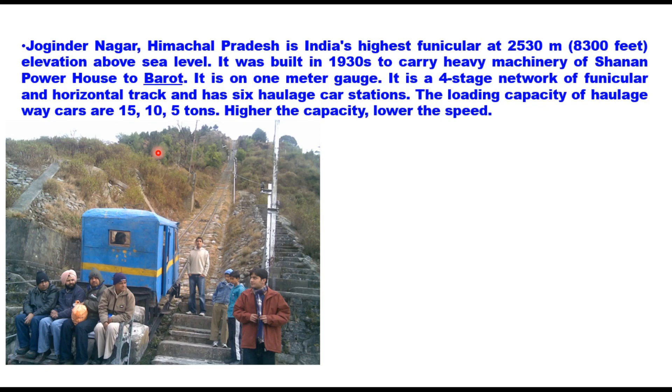Joginder Nagar, Himachal Pradesh is India's highest funicular at 2530 meters, 8300 feet elevation above sea level. It was built in 1930s to carry heavy machinery from Shanan power house to Bansi. It is on one meter gauge, it is on the entire network of funicular and horizontal track and has six haulage car stations. The loading capacity of haulage way cars are 15, 10, and 5 tons. Naturally, higher the capacity, lower will be the speed. And there are in addition to that funicular railways in Maharashtra also and in Tamil Nadu also.